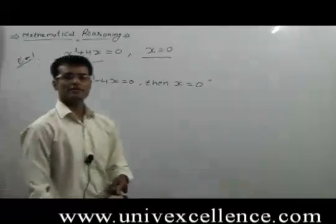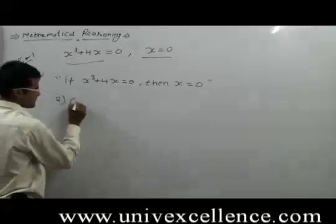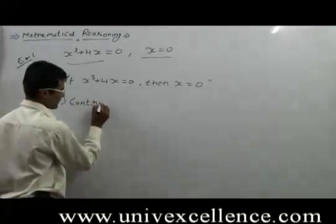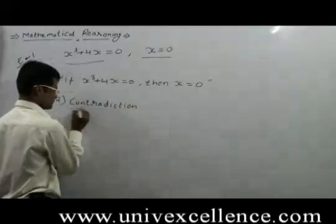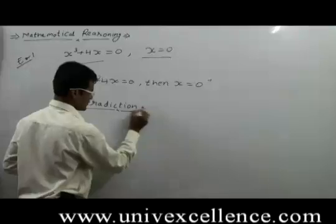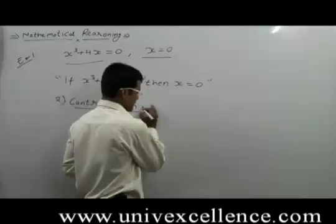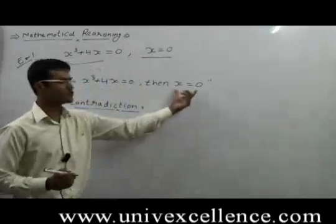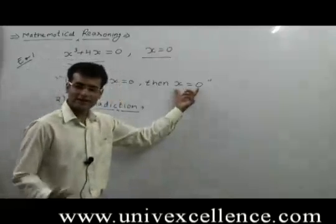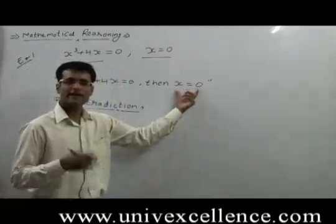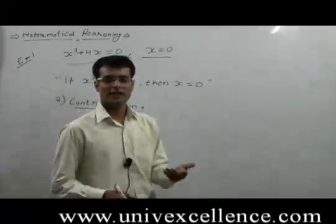Now if we go to the contradiction method — in the contradiction method, if we have to prove that x is equal to 0, then assume the opposite: assume that x is not equal to 0.